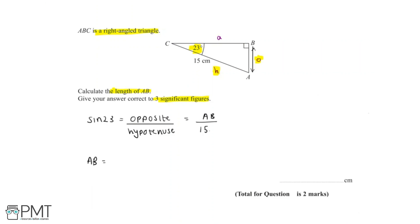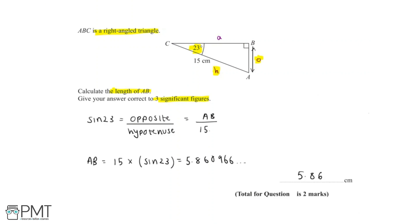So we can say that sine 23 is equal to opposite over hypotenuse, which is equal to AB over 15. And we can now say that line AB equals 15 multiplied by sine 23, and we'll get an answer of 5.860966... We're asked to give our answer correct to three significant figures, and so line AB is equal to 5.86 centimetres to three significant figures.